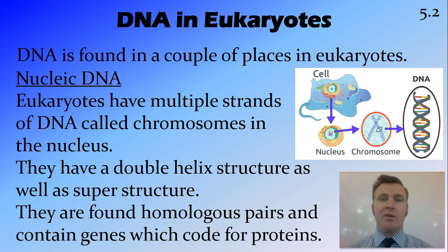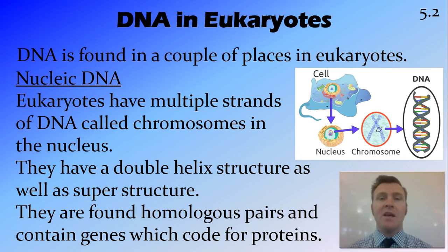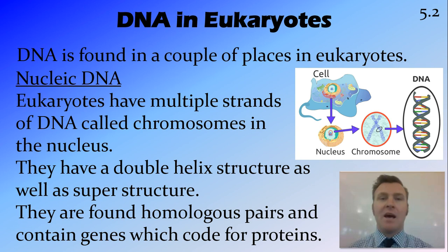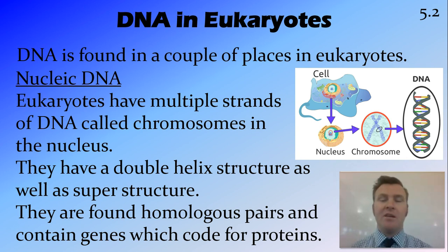Interestingly, almost half of the chromosome is protein that actually wraps it up, so only half of it is DNA. Of that DNA, it's only about 3% that codes for proteins. This means the vast majority of DNA in chromosomes is what we call non-coding DNA. We used to call this junk DNA, but we've found it actually has some sort of role — some of it is regulatory sections that tell a cell when to make a protein, and some of it we still don't know what it does.